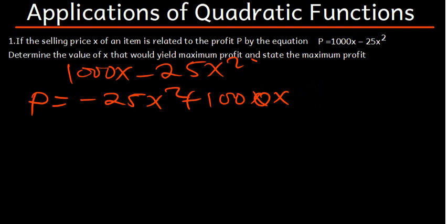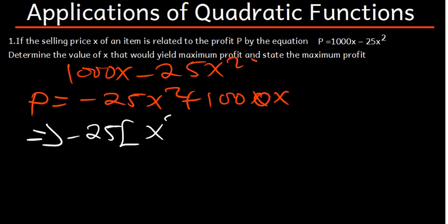Now using the completing the square method, we first factor out A, which in this case is negative 25. So we get negative 25 open brackets, and inside we remain with X squared minus 40X, because 1000 divided by 25 gives us 40.